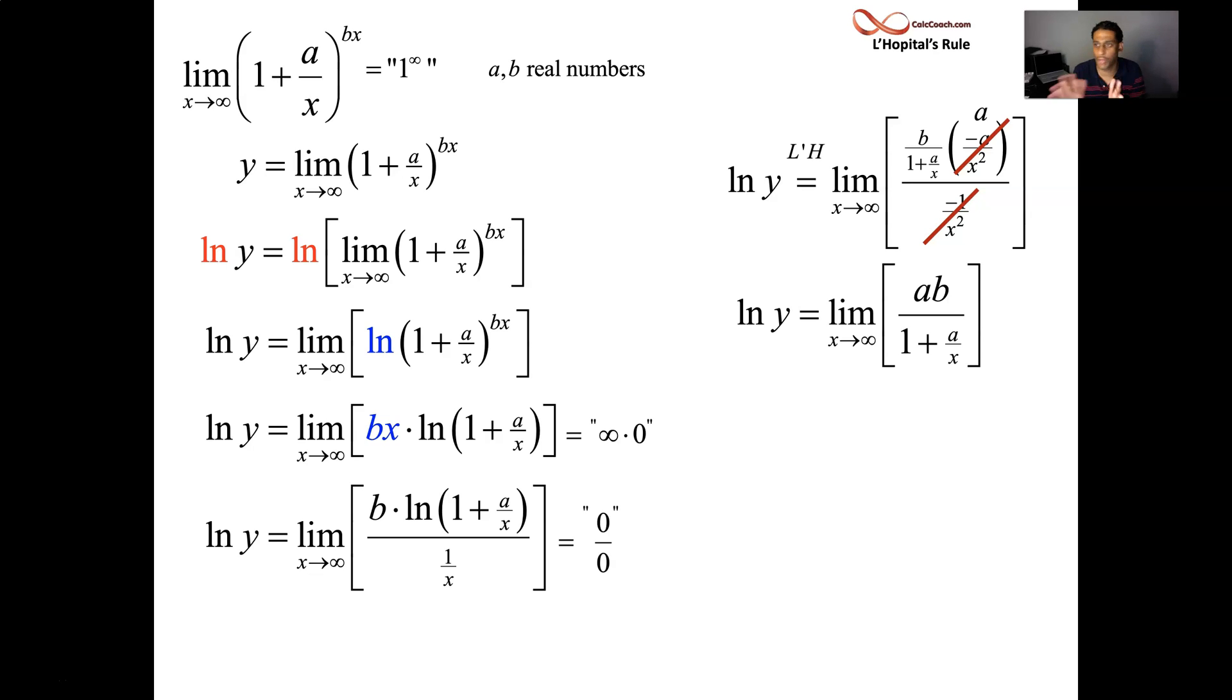Simplification step. One time L'Hopital is all you need. X gets large. A over X goes to zero. One is the denominator. This limit is A times B. That's not the answer. That's the natural log of the answer. E to the left is E to the right. Your answer Y is E to the A times B. So if you ever see this limit again, you can just quote this. You can put it on the cheat sheet. This limit is E to the A times B.